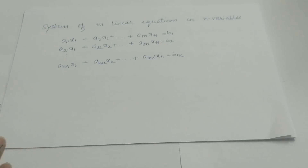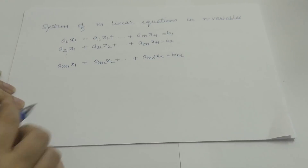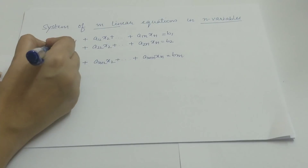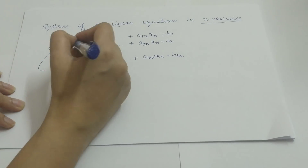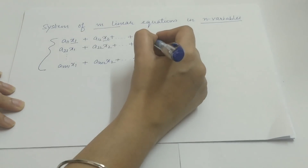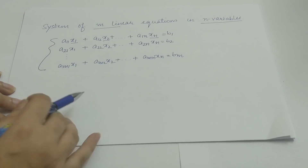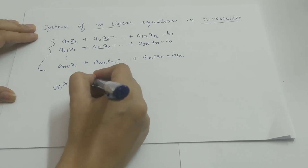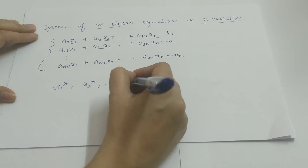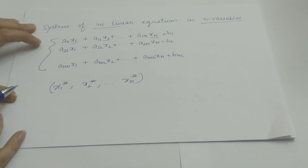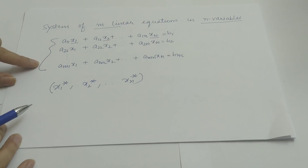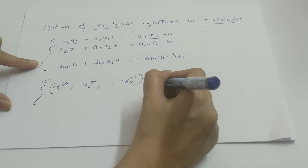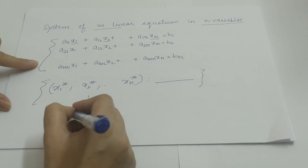Now we move ahead to see what a system of linear equations is. A system of m linear equations in n variables is nothing but a collection of m linear equations in the same variables x1, x2, ..., xn. A solution to this system is an n-tuple (x1*, x2*, ..., xn*) that satisfies all of these m linear equations simultaneously. The set of all these solutions taken together is called the solution set.